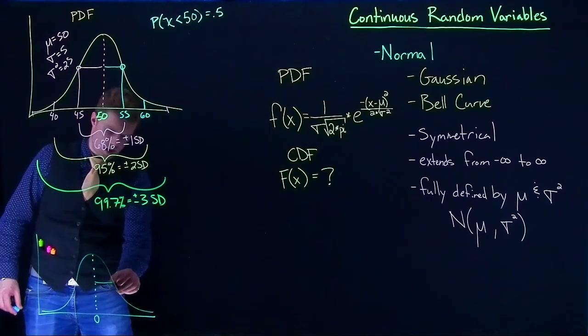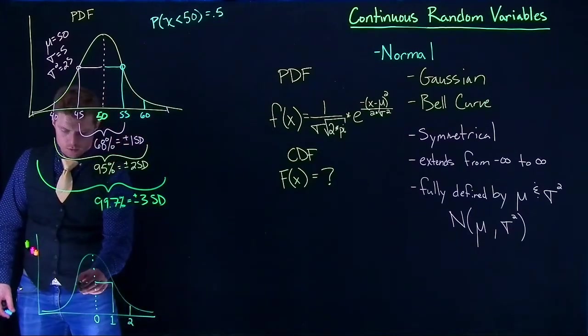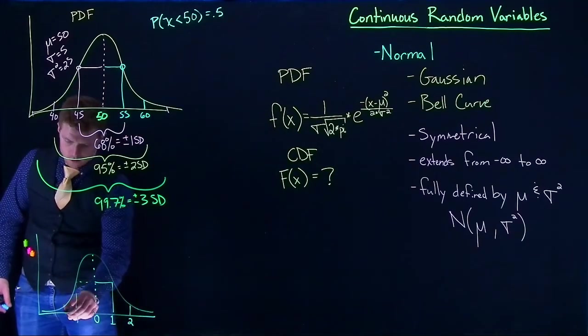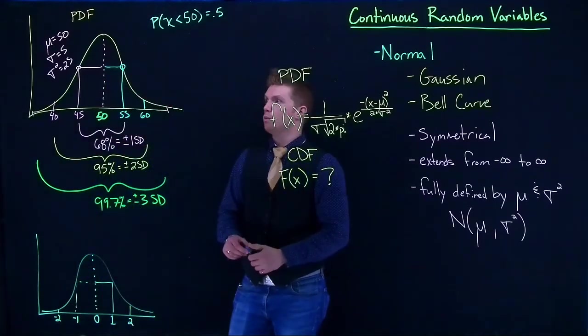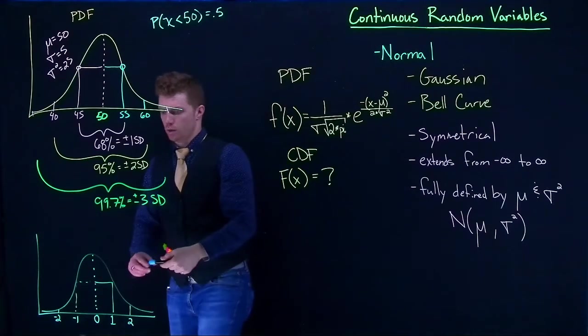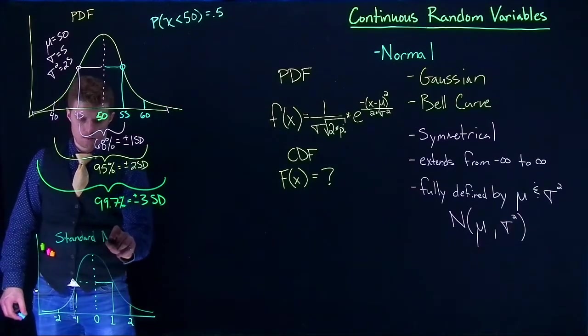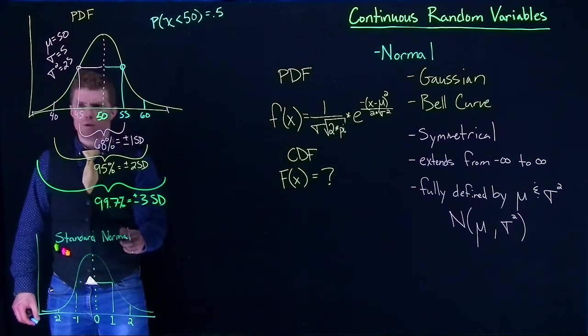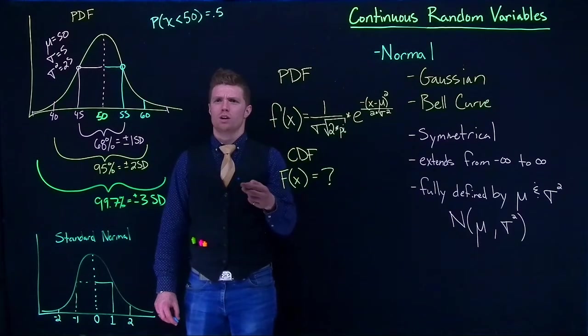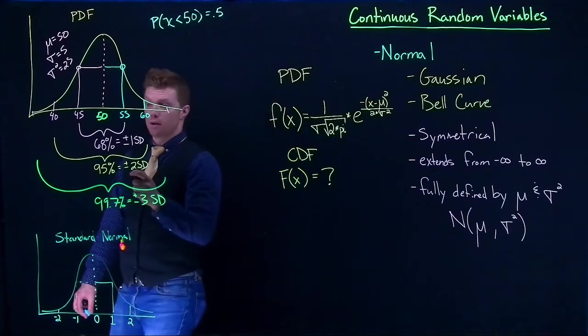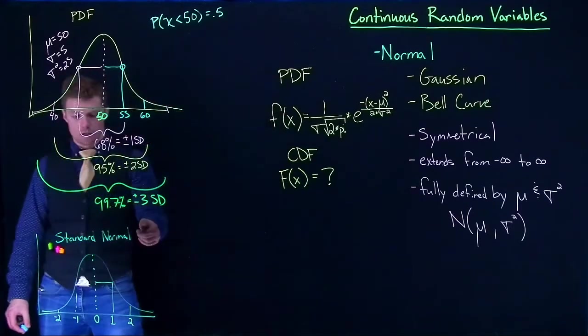And it's centered at zero. And then one standard deviation away is going to be one. Two standard deviations away is two. Same thing over here, negative one and negative two. So we can convert any normal distribution and convert it into what's called the standard normal. And when we do that conversion process, it's called like standardizing. Sometimes we call it like a Z transformation.